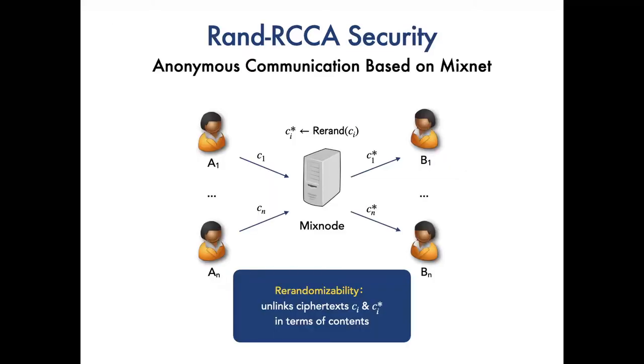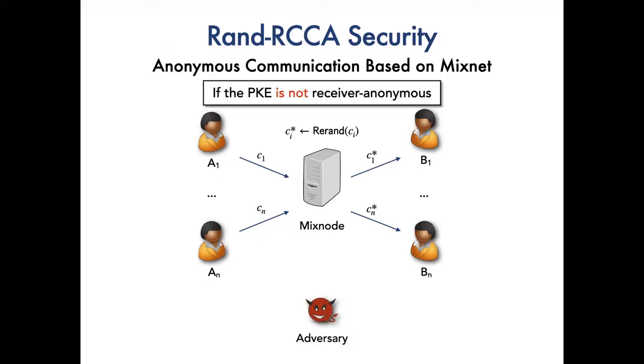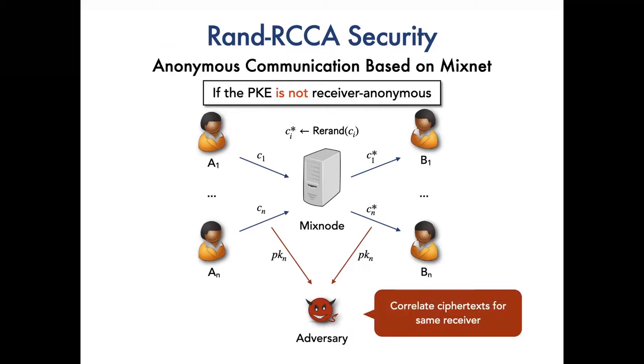Taking the MixNet-based anonymous communication as an example, in the MixNet, the MixNode receives a batch of ciphertexts from senders A1 to AN, and then the MixNode randomizes them and sends them to the receivers B1 to BN. The universal randomization performed by MixNode unlinks ciphertext C and C' in terms of contents such that the adversary cannot correlate the sender and receiver. However, we notice that the underlying public key does not change after randomization.